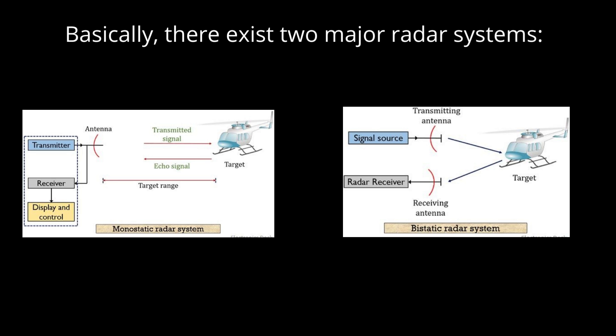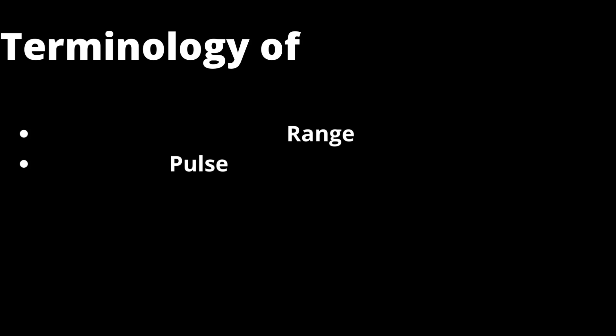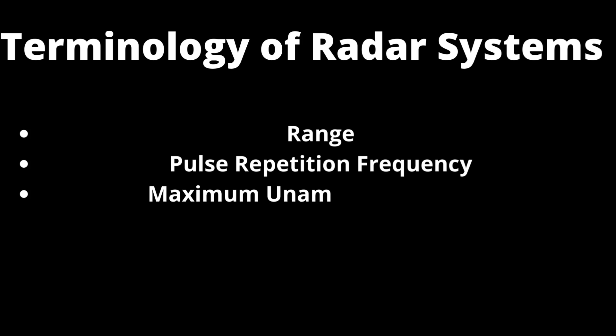Now let's discuss the terminologies of radar systems. The important parameters are: range, pulse repetition frequency, maximum unambiguous range, and minimum range. These parameters are important for understanding radar systems.